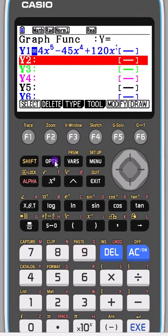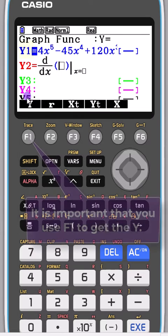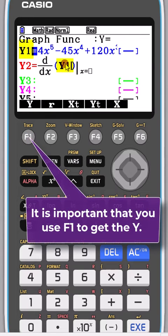We exit from there and what we need to do is go into options and we need to go into calculus and differentiate this. I want to differentiate this function, so I'm going to tell it to differentiate y1.